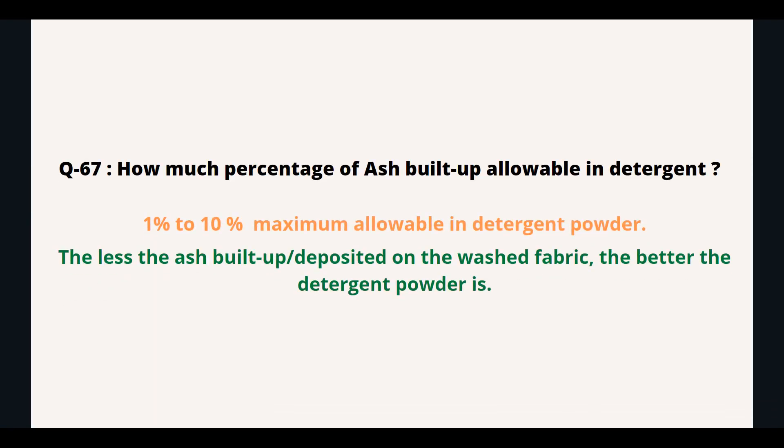How much percentage of ash buildup is allowable in detergent? 1 percent to 10 percent maximum is allowable in detergent powder. The less the ash buildup or deposit on the washed fabric, the better the detergent powder is.